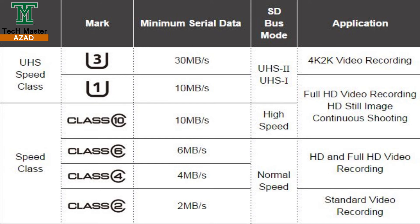For DSLR cameras, use at least Class 10 memory for full HD video recording. For 2K and 4K video recording, you should use U1, USS1, USS2, or USS3 speed class memory cards to ensure proper recording without stopping.